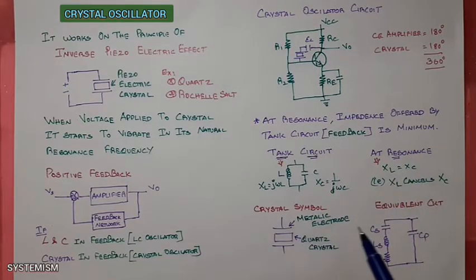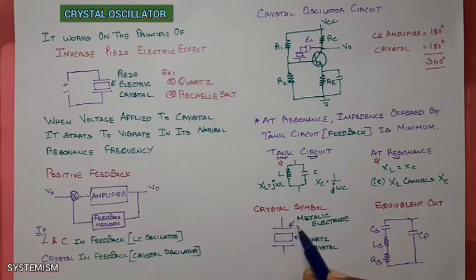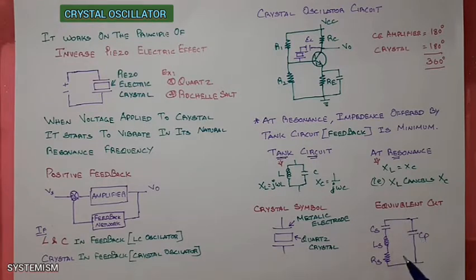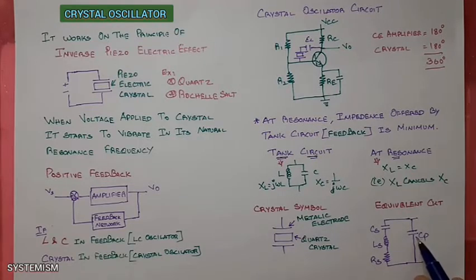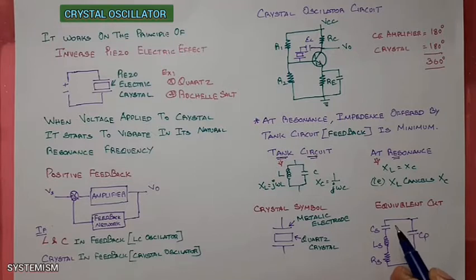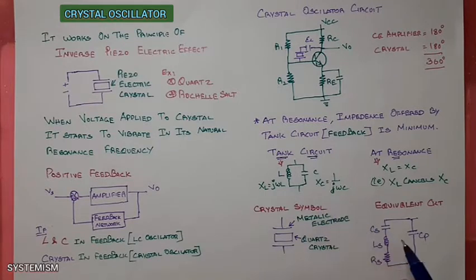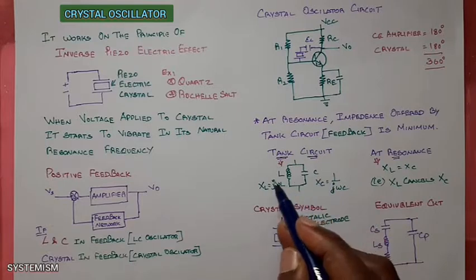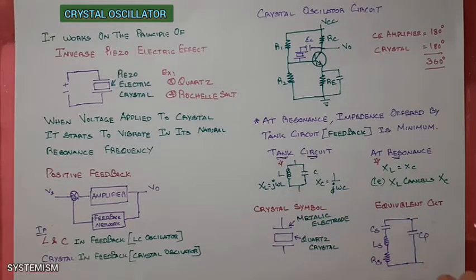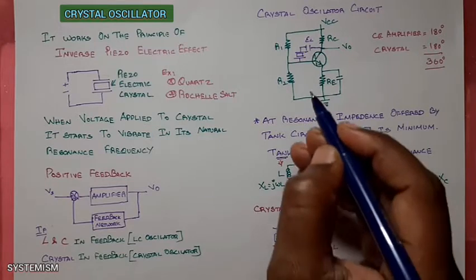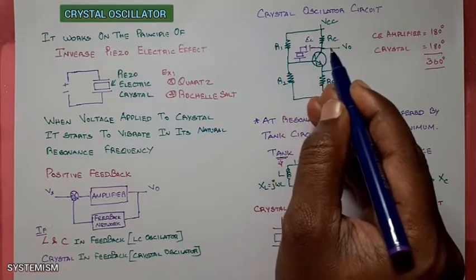We have to use a crystal in the same way. This is the symbol of the crystal. In this crystal, we have a quartz crystal and a mechanical electrode. The equivalent circuit of this crystal is given as follows: we have a series resistance, series capacitance Cs, series inductance Ls, and series resistance Rs. We also have a parallel capacitance Cp. The same crystal can be drawn as this electrical equivalent circuit. This tank circuit equivalent means this equivalent circuit is also a type of tank circuit, so it will also have a resonance frequency. At that resonance frequency only, it will allow more amount of feedback in this feedback loop.